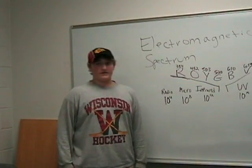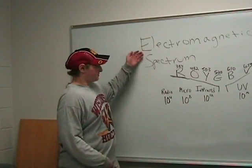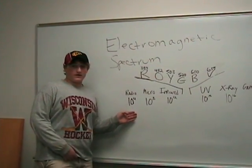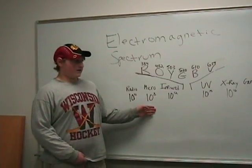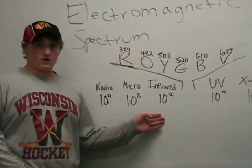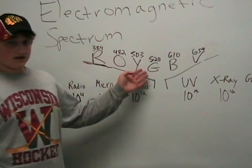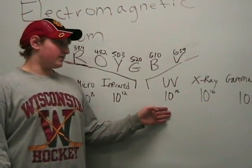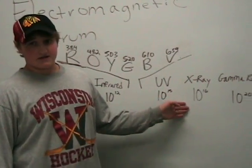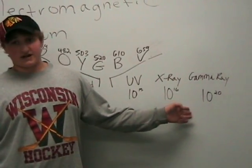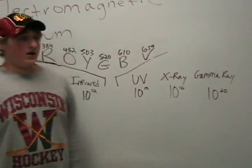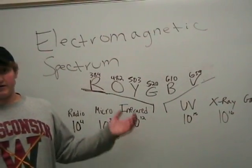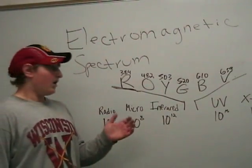I'm here to tell you about the frequencies of the EM spectrum. Starting with radio waves, it's 10 to the 4th hertz; microwaves are 10 to the 8th hertz; infrared is 10 to the 12th hertz; ultraviolet is 10 to the 15th hertz; X-ray is 10 to the 16th; and finally gamma ray is 10 to the 20th. Visible light will be covered separately as it's the only range visible to the human eye.